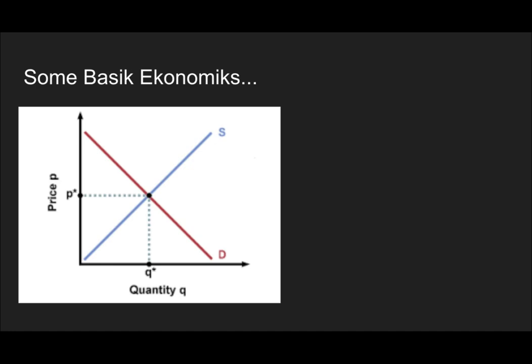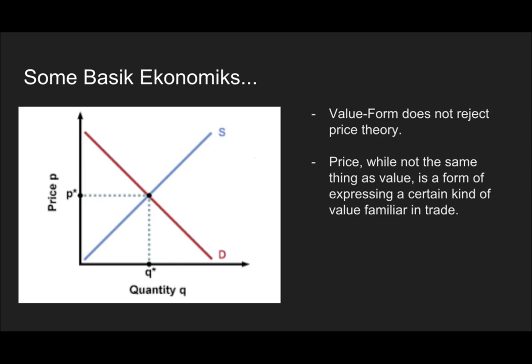This is price theory. You can arrive at the price of a product by measuring it in terms of its supply and demand curves. This theory was brought forth by Milton Friedman and some Chicago school economists, and earlier ones as well. Now, the first misconception we want to do away with is that value form — or any of Marx's concepts on value — do not reject price theory. One of the first things opponents of Marxism will tell you is that Marxism doesn't understand economics because it rejects supply and demand. Karl Marx himself would have been one of the first economists to actually agree with price theory.